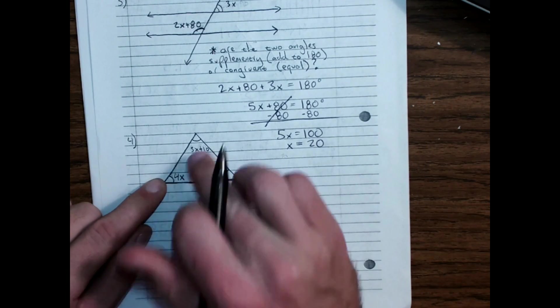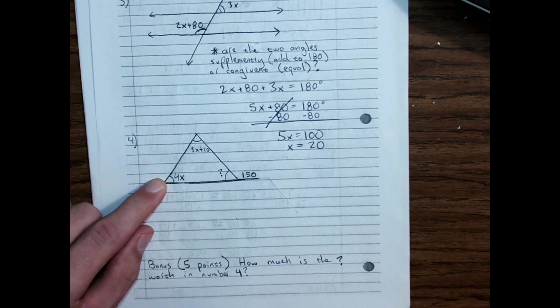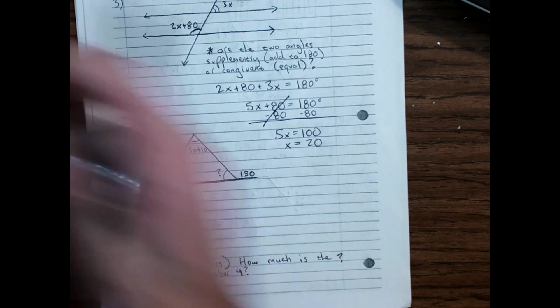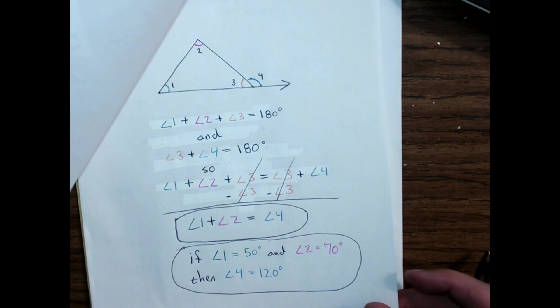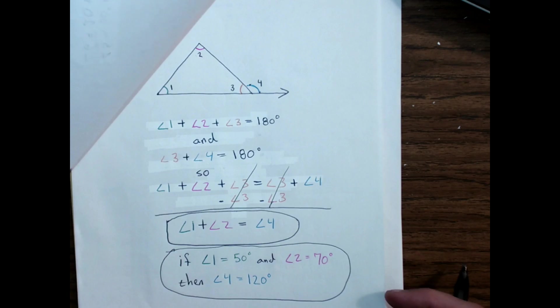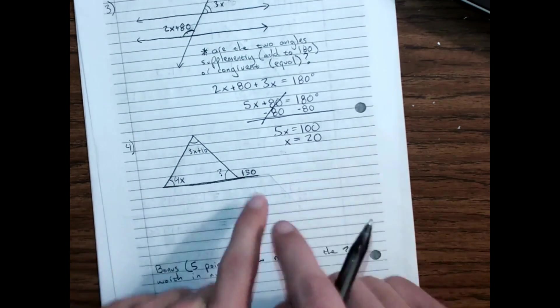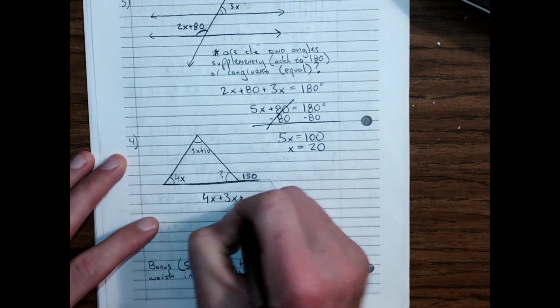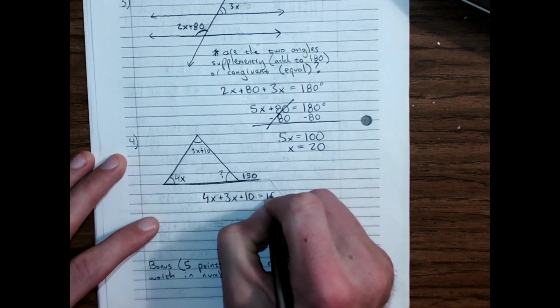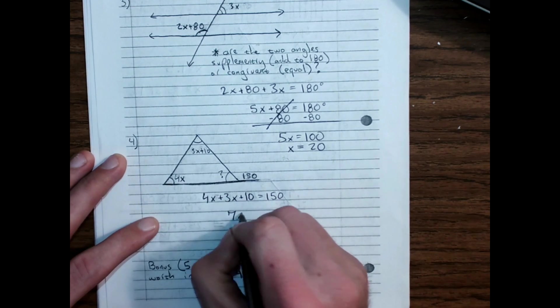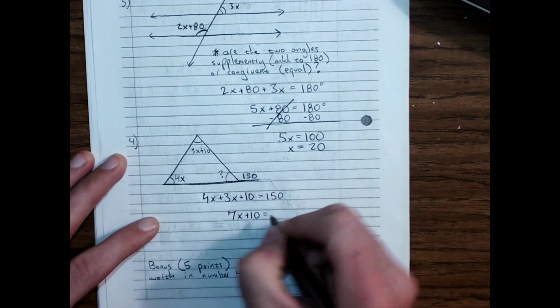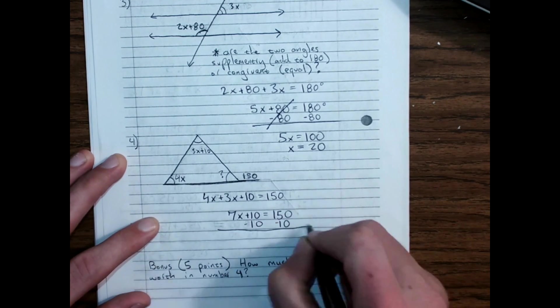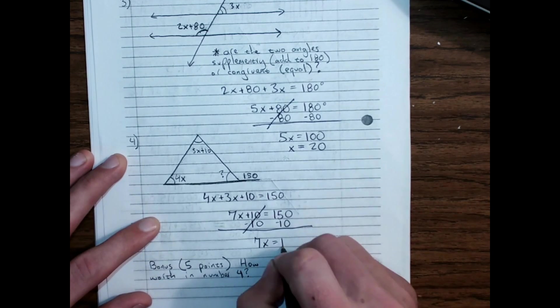And here, we know these three angles add up to 180 degrees. We know these two add up to 180 degrees. And, just like the notes about triangle relationships that I just sent out, and that we went over in class. So, we know these two angles add together to equal this angle. So, 4x plus 3x plus 10 equals 150. 4 plus 3 is 7x plus 10 equals 150. Subtract 10 from both sides.